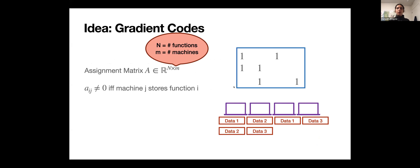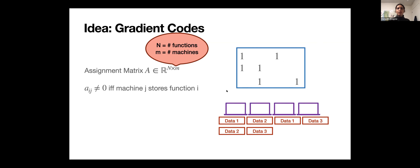One idea that's been proposed — originally in work of Tandon et al. — is gradient codes. This builds redundancy into the data stored at different machines so you can recover the full gradient even when some machines are stragglers. The model uses an assignment matrix, an n-by-m matrix where n is the number of functions or data blocks and m is the number of machines. The (i,j) entry is non-zero if machine j stores function i. For example, in a mini example, machine one has access to data one and data two, so it can compute the gradient of f1 and f2.